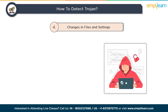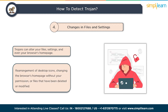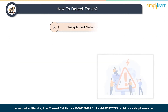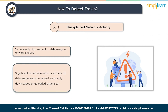Trojans can also cause changes in files and settings, and even your browser's homepage. Trojans often manipulate files, settings, and configurations on your computer — you might notice that your desktop icons have been rearranged or your browser's homepage has been changed without your permission. Additionally, unexplained network activity such as an unusually high amount of data usage might point to a trojan infection, as the trojan may be using your network connection for malicious purposes.